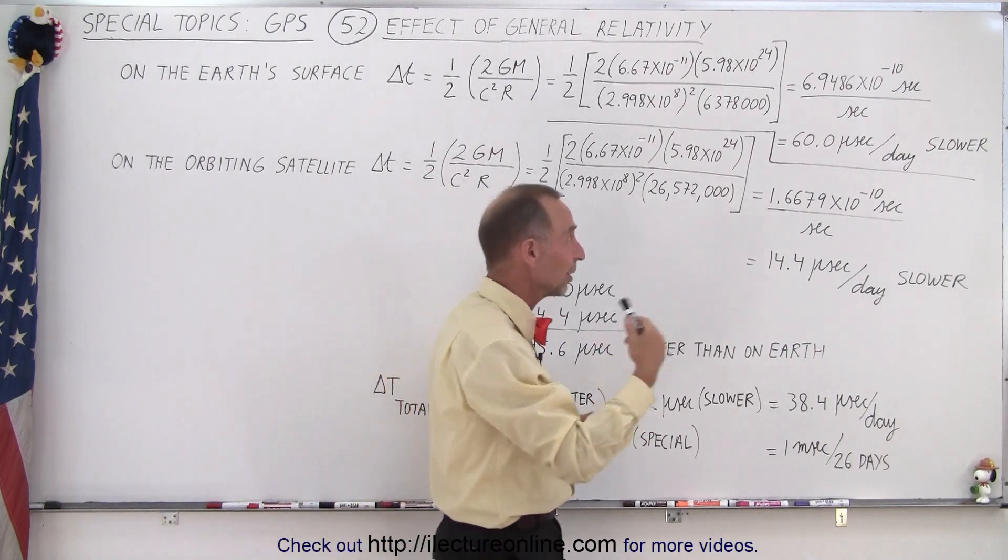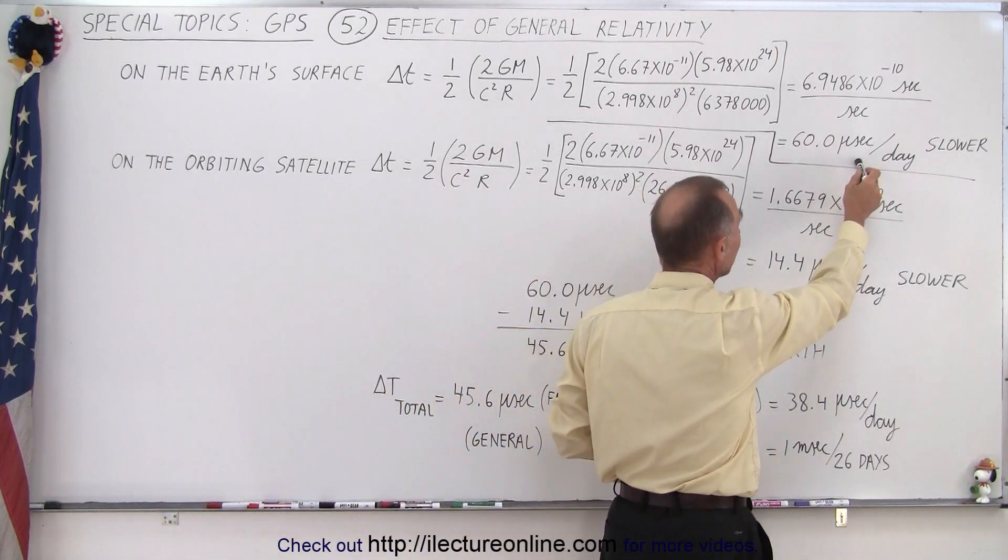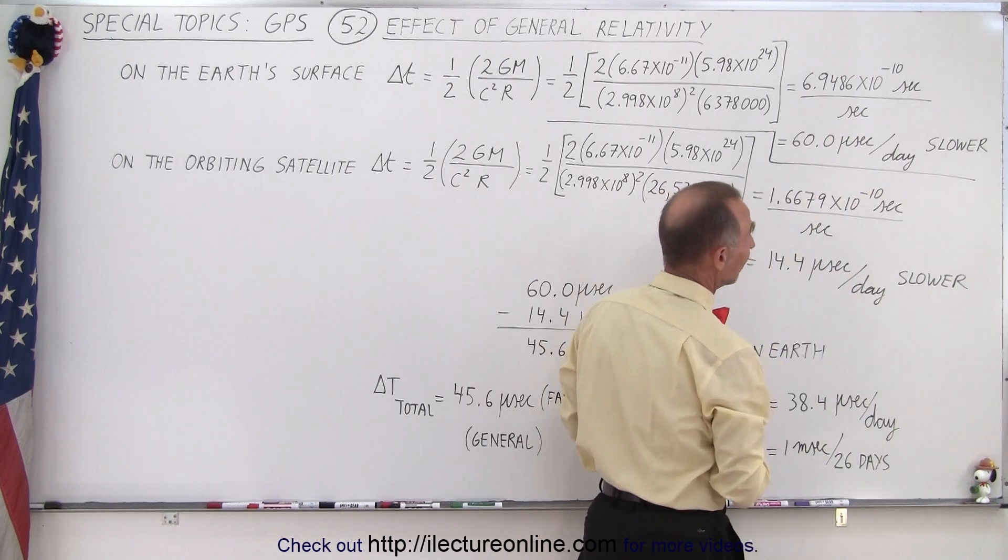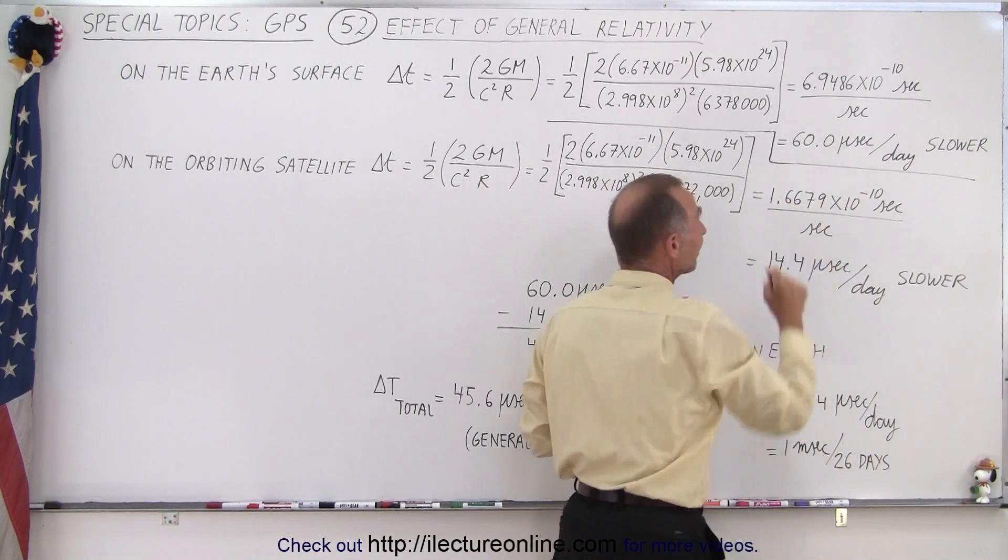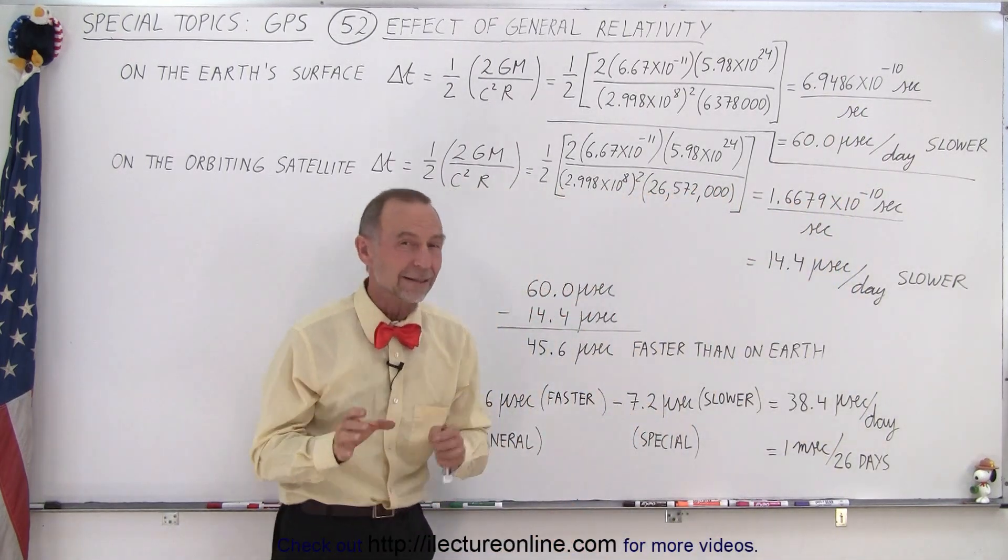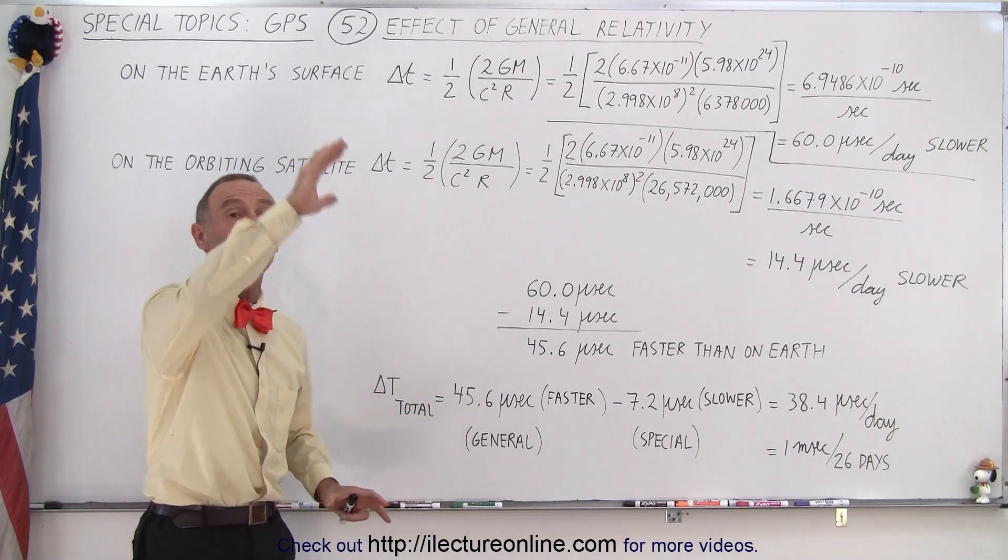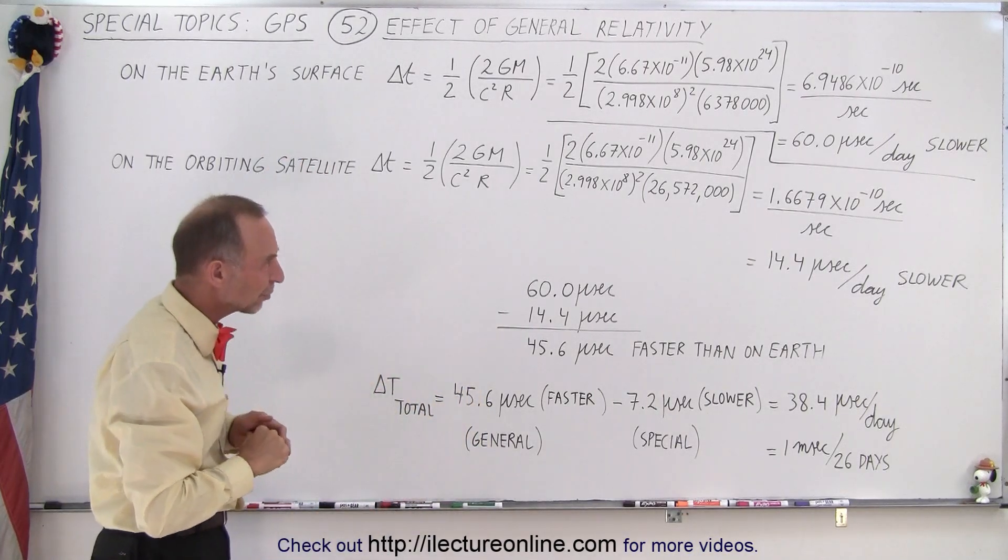That doesn't seem like a lot but then if we compare that to a day, we multiply that number by 86,400, we get 60 microseconds per day that the time runs slower on the Earth as opposed to somewhere far away in space.